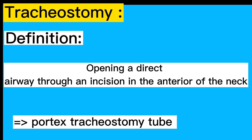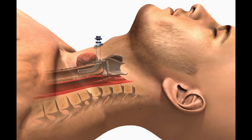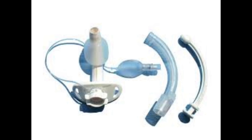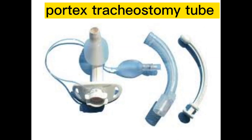A tube is then inserted, which is called a tracheostomy tube. Here you can see this is the tracheostomy opening, and this is the tracheostomy tube.